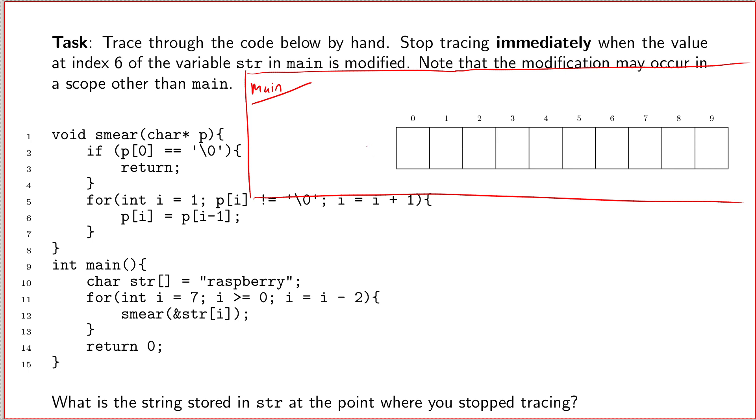Okay. So, in main, I create this string called str. And it's there. And it's of type array of char. And its initial value is the string, rather unsurprisingly, the string raspberry. And we get a free null terminator because we specified it in double quotes.